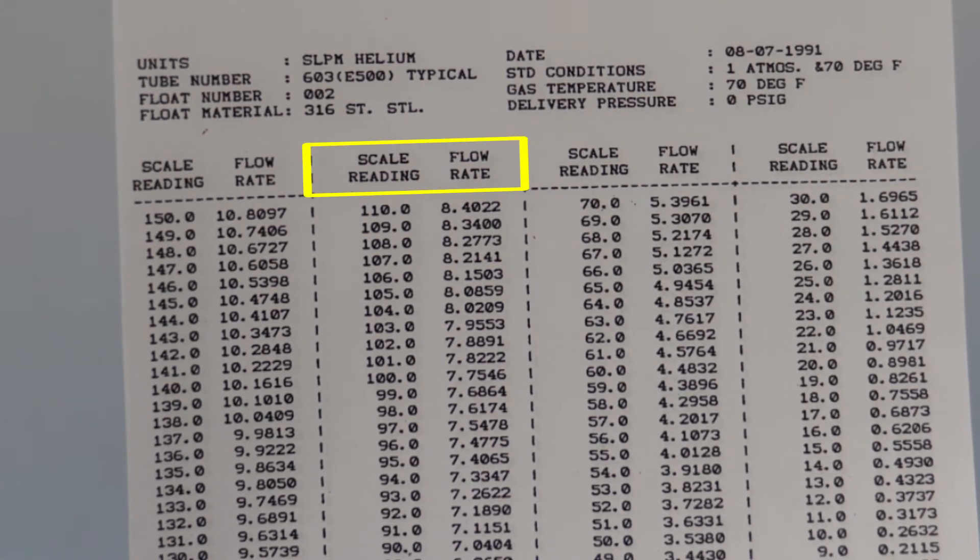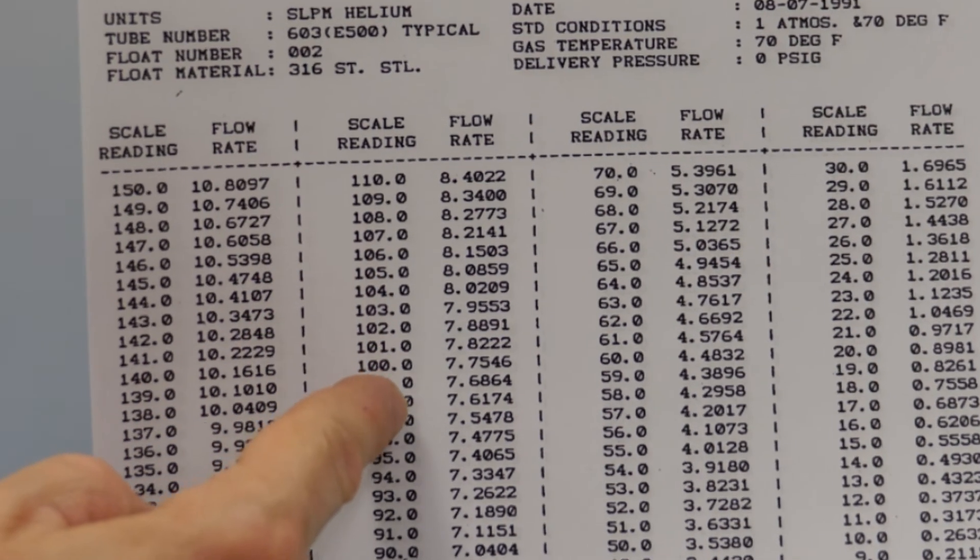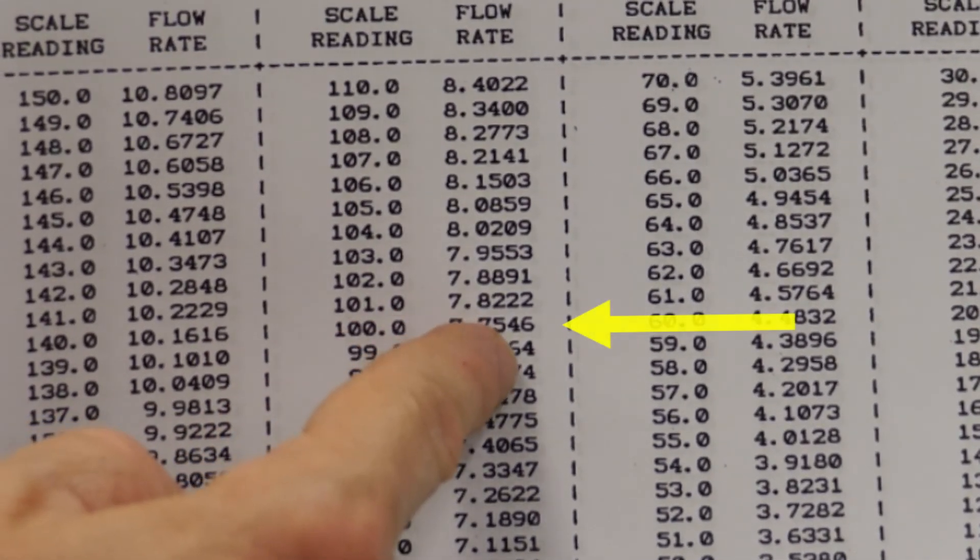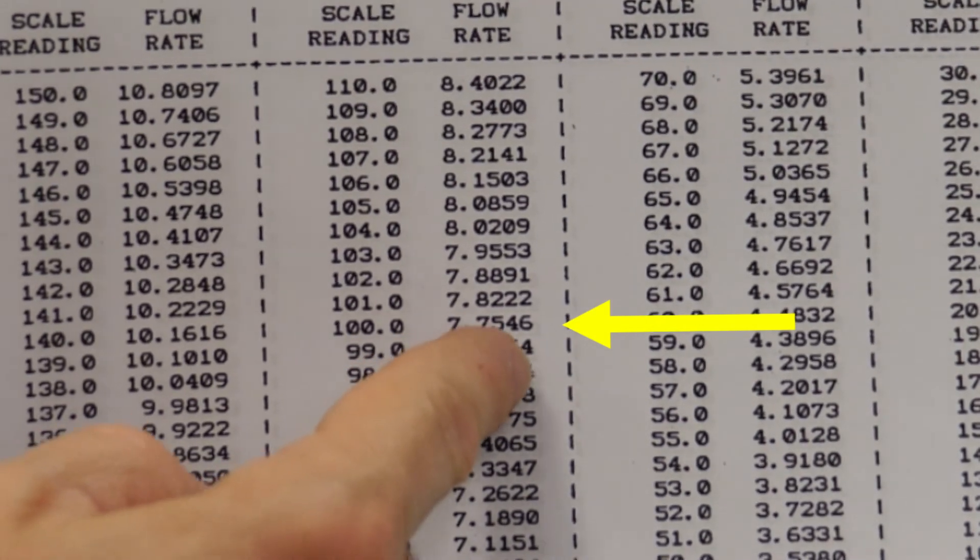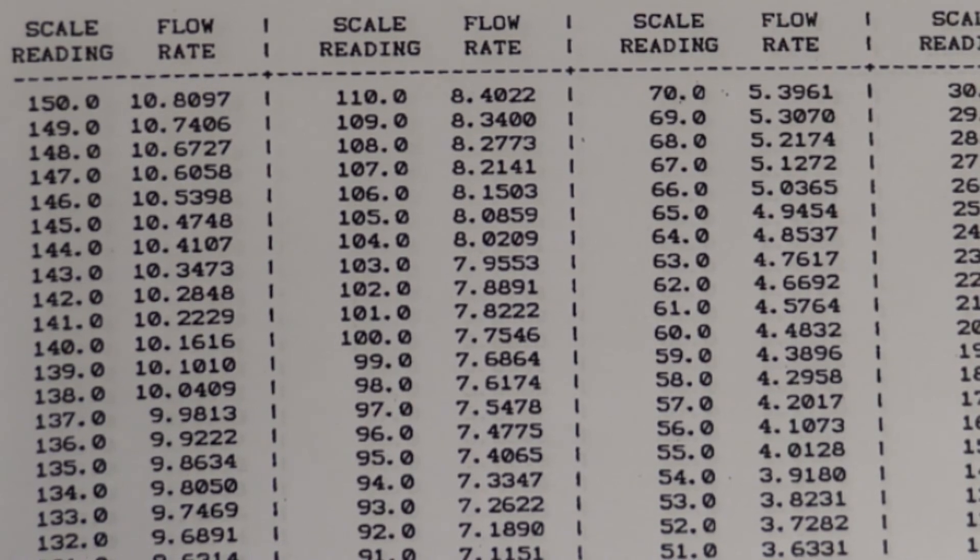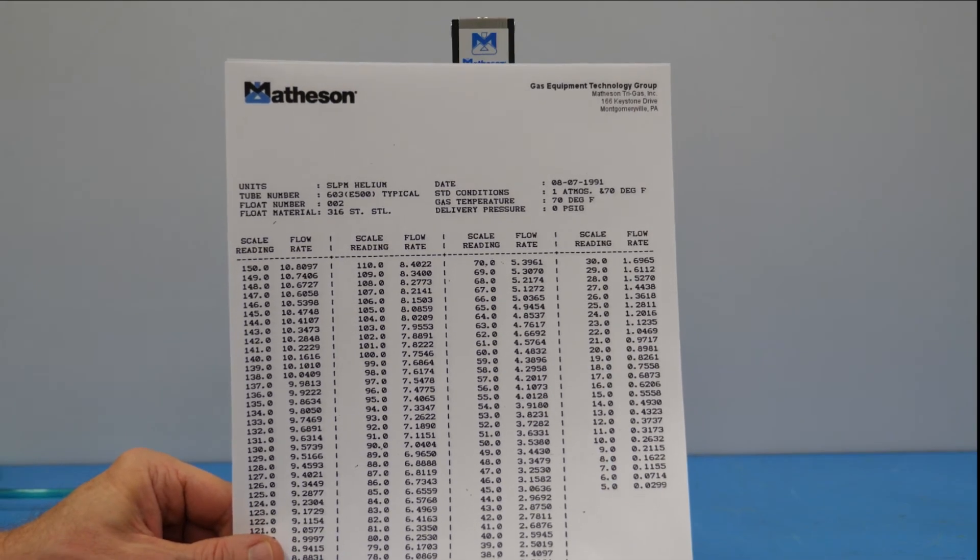So we locate 100 millimeters under the scale reading column, and we shift over to the flow rate, which is 7.7546 standard liters per minute helium. That's essentially how you read and then interpret what your flow rate is.